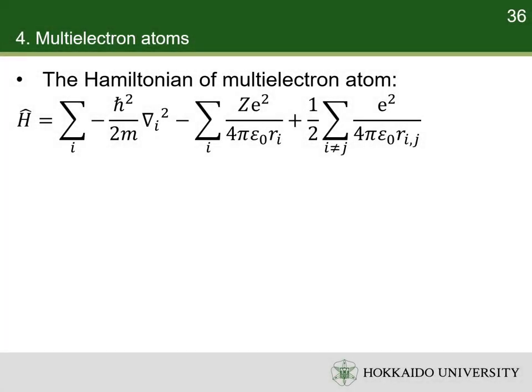The Hamiltonian of a multi-electron atom is much more complicated than that of the hydrogen atom. It has three components: first, the total kinetic energy of the electrons; second, the total potential energy between the electrons and the atomic nucleus; and last, the total potential energy between the electrons.